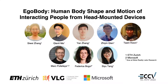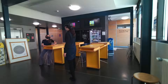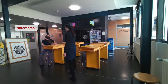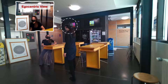We introduce EgoBody, a large-scale dataset for egocentric 3D human body shape and motions of interacting people in complex 3D scenes. To understand human behaviors during social interactions, a first step is to estimate 3D human shape and pose of a social partner — referred to as the interactee — from visual inputs, especially from the egocentric view. However, research in this area is severely hindered by lack of data.